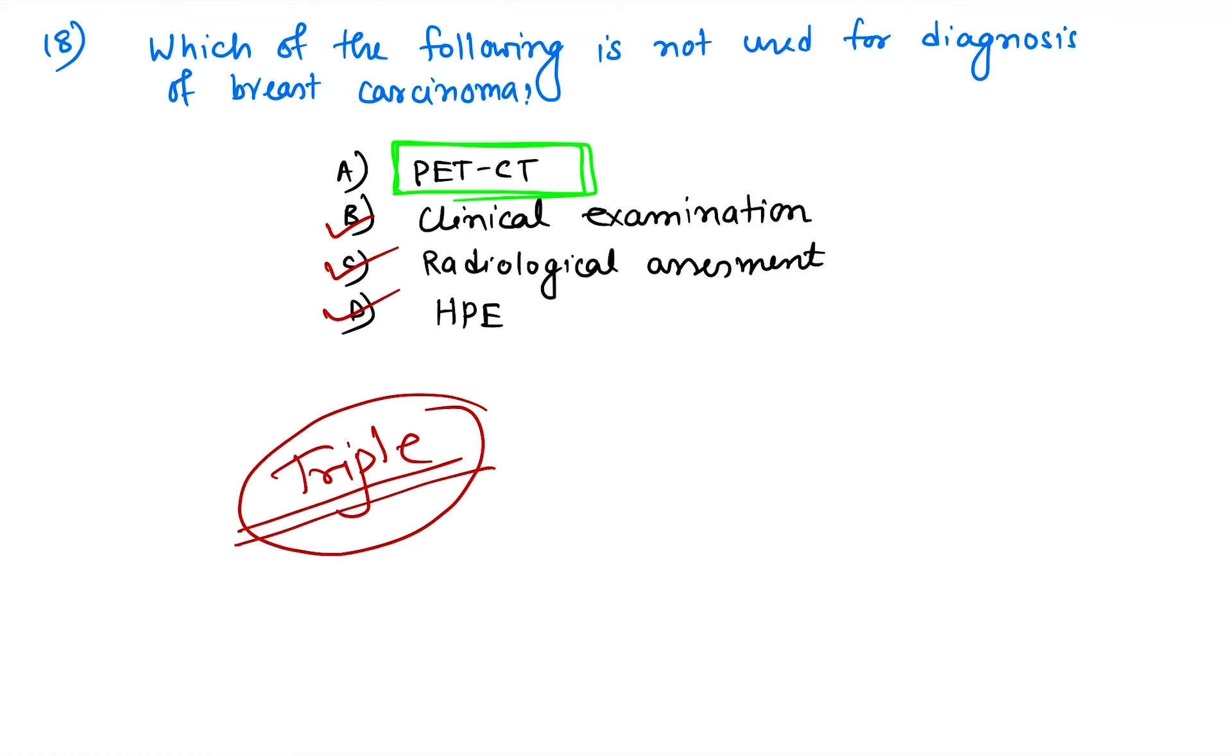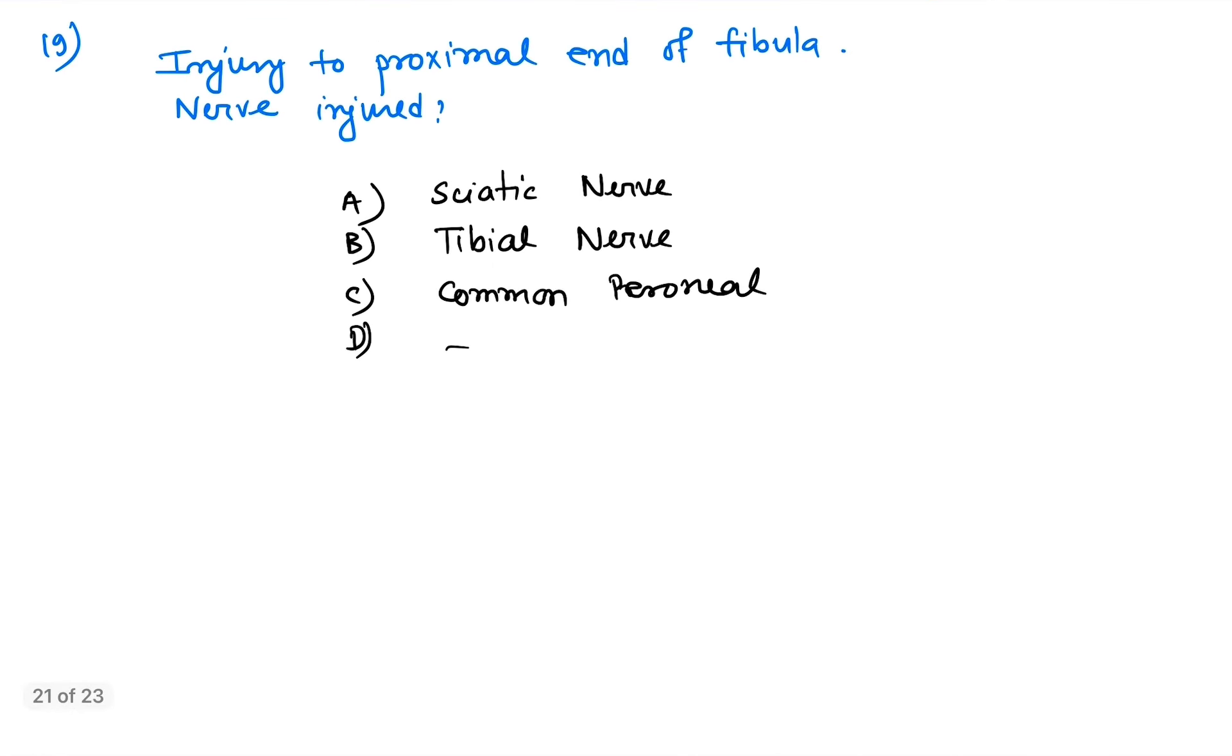Question number 19: injury to the proximal end of fibula will damage which nerve? The proximal end of fibula, near the neck of the fibula, has one nerve that passes near it—the common peroneal nerve.